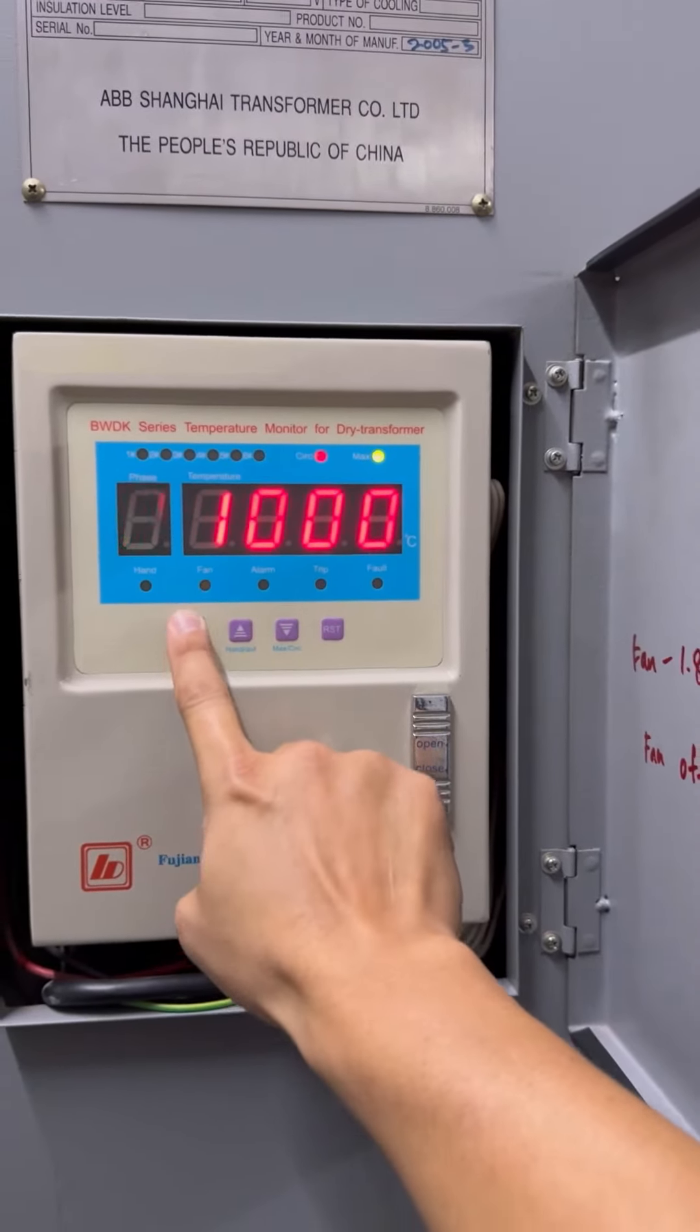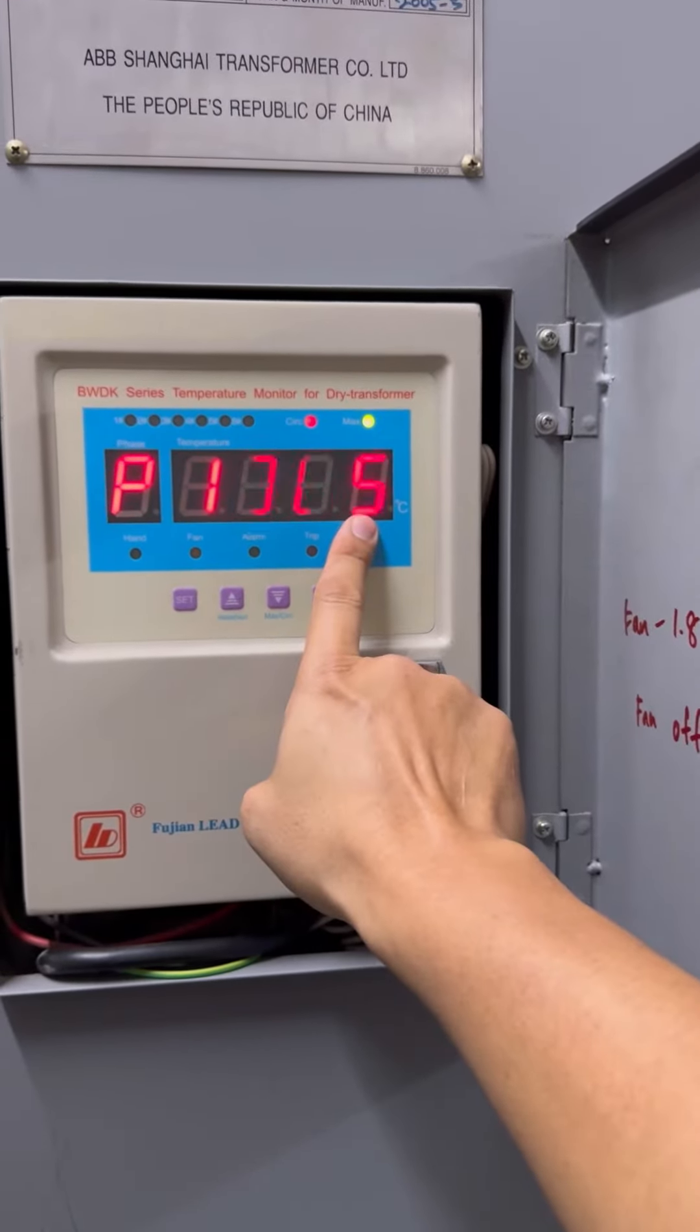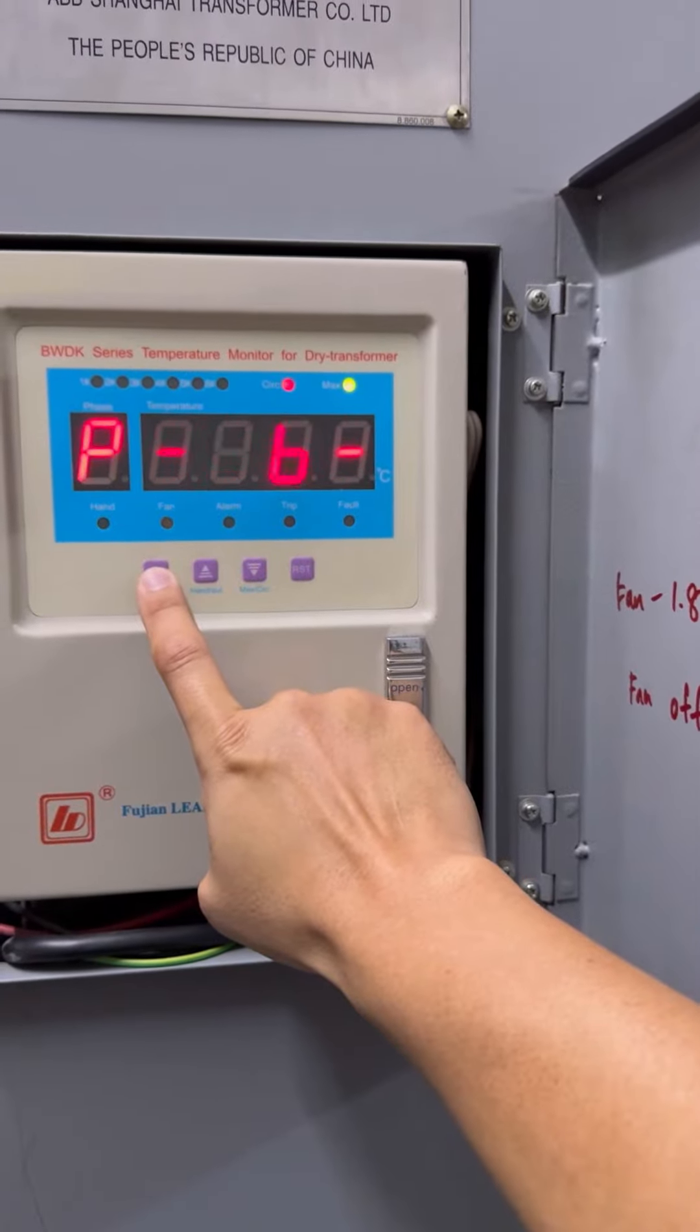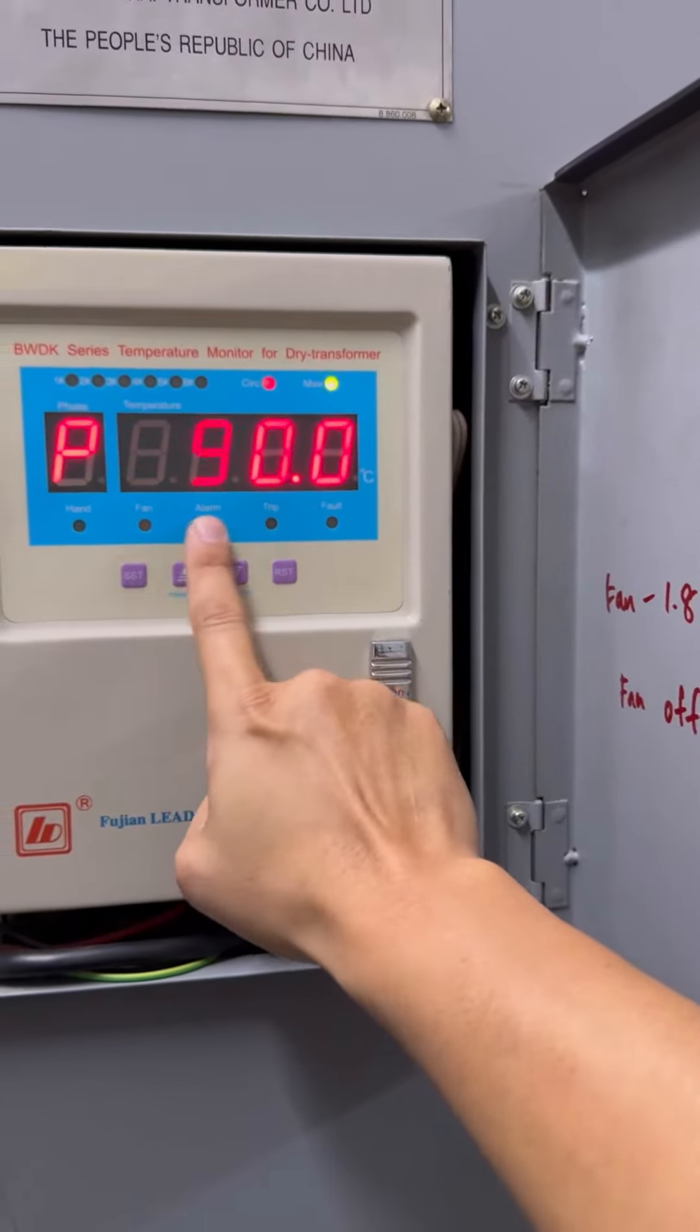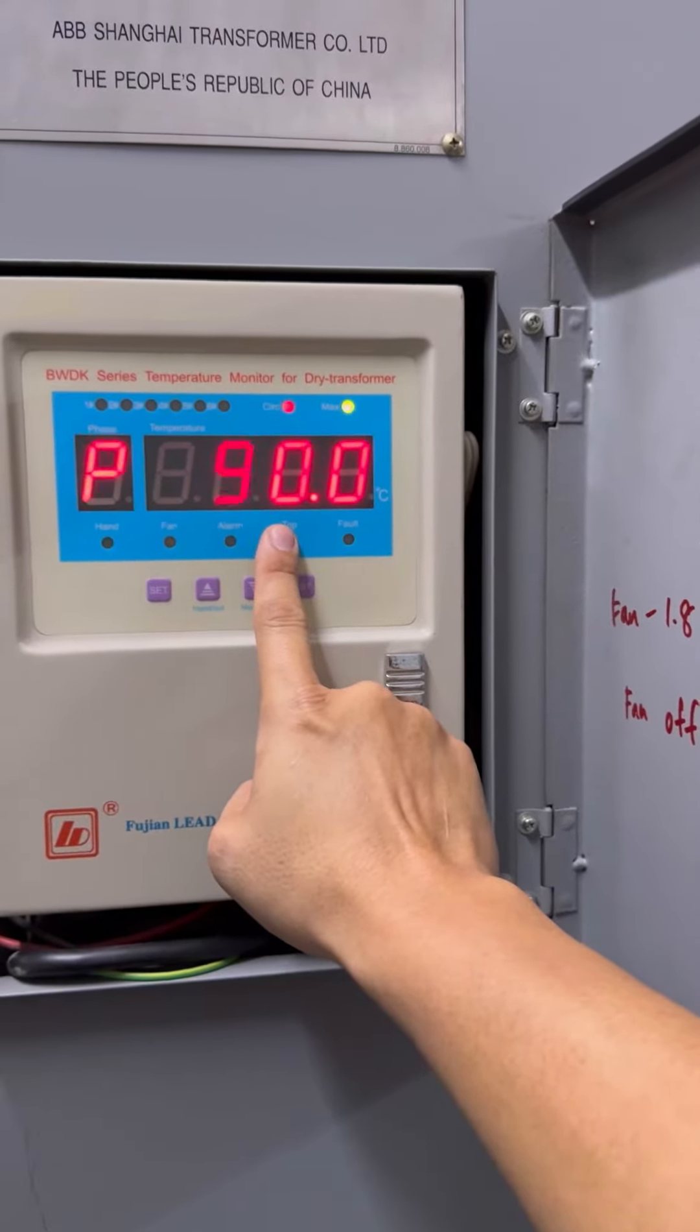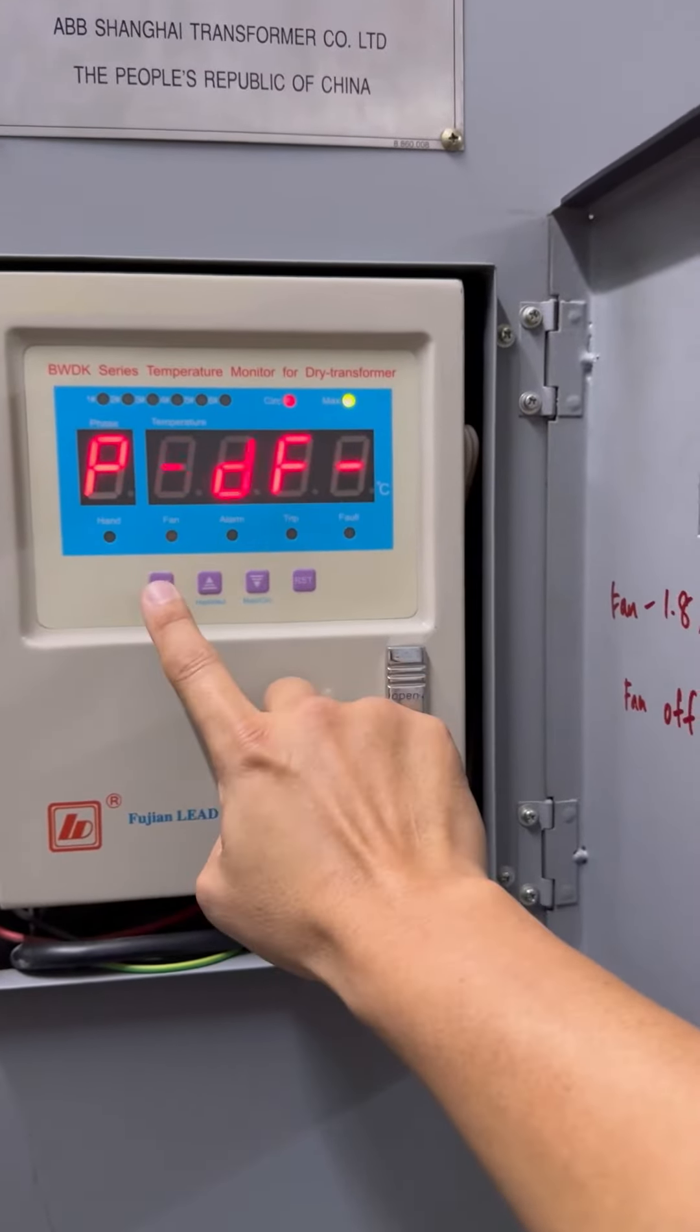Press again and the code goes through 1005, then you press Set. Here you see this code. Then you press again - this is the fan on temperature, 90 degrees Celsius.